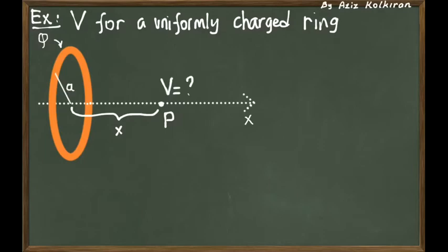So the ring has a radius a and we will start by dividing the ring into small charges, small pieces of dq, and these pieces are little arcs of the ring.